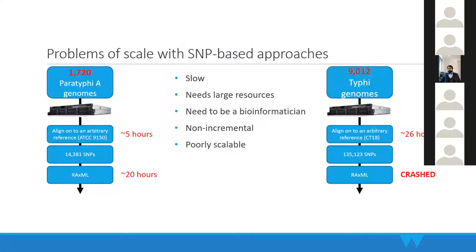The traditional approach is SNP-based methods. I tried SNP-based methods on two datasets — about 2,000 Paratyphi A genomes and another 9,000 Typhi A genomes, both causing enteric fever. The problem is that with thousands of genomes, you need a large server, long mapping time, even longer alignment and phylogeny time. This is not scalable and not incremental — doing this every time is very painful.